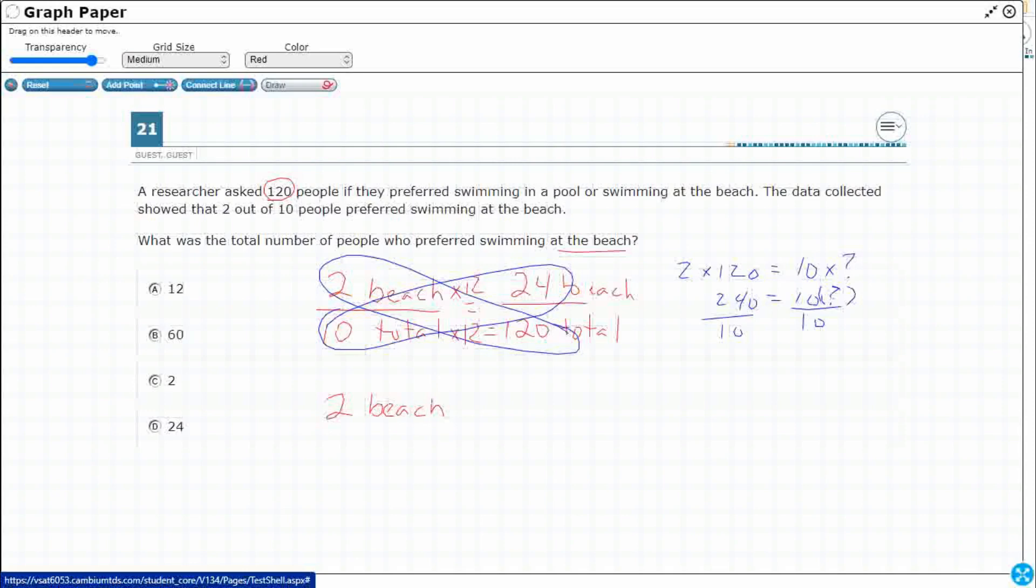So 2 people like the beach out of 10 total. And I'm looking for an unknown amount of people that like the beach out of 120 total. So you can actually set this up both ways.